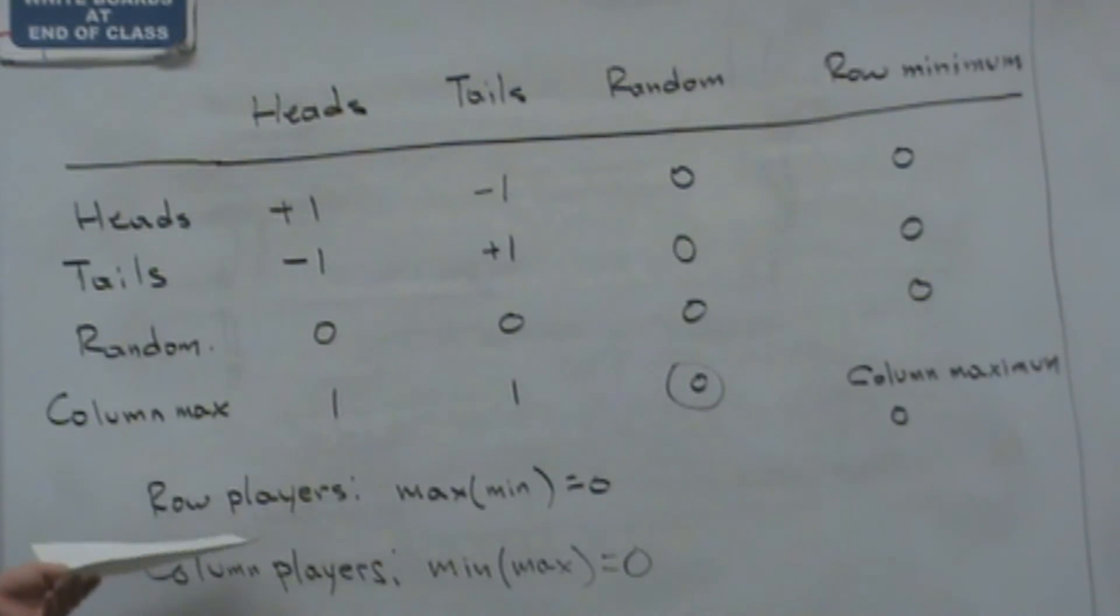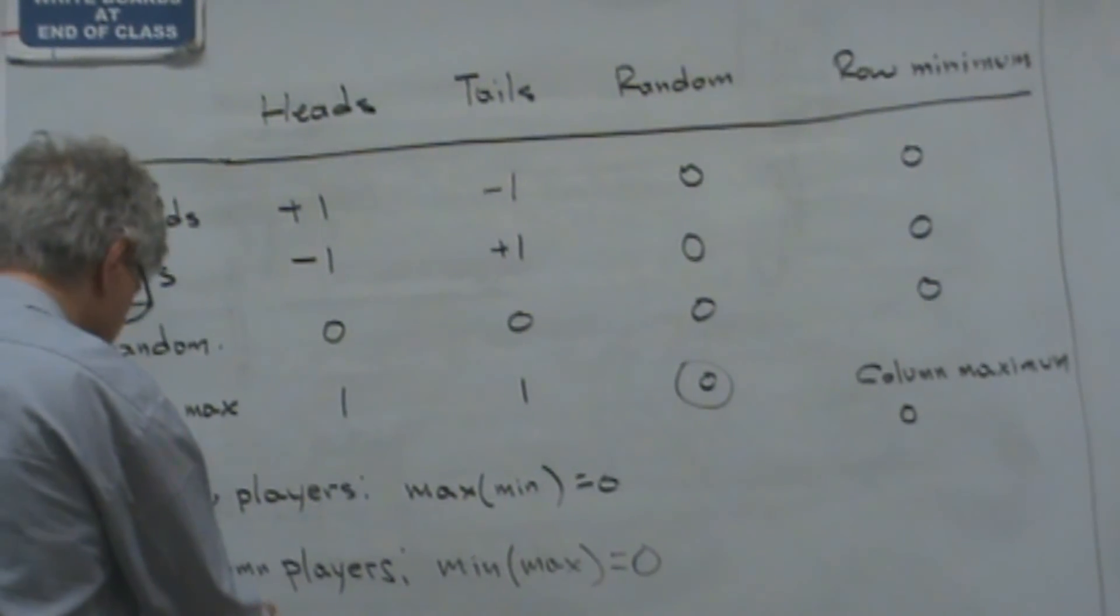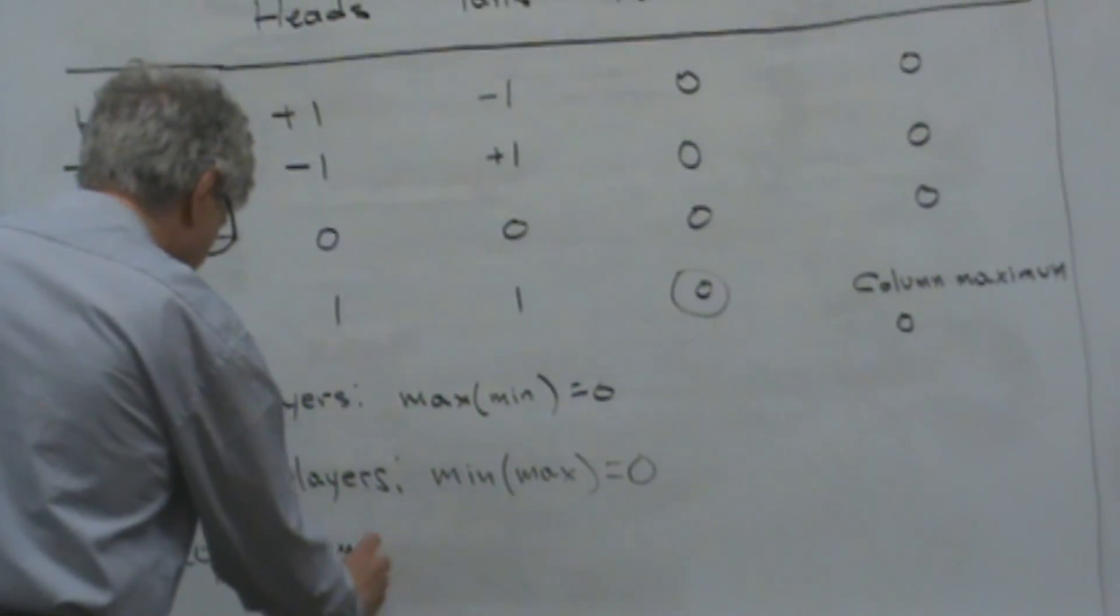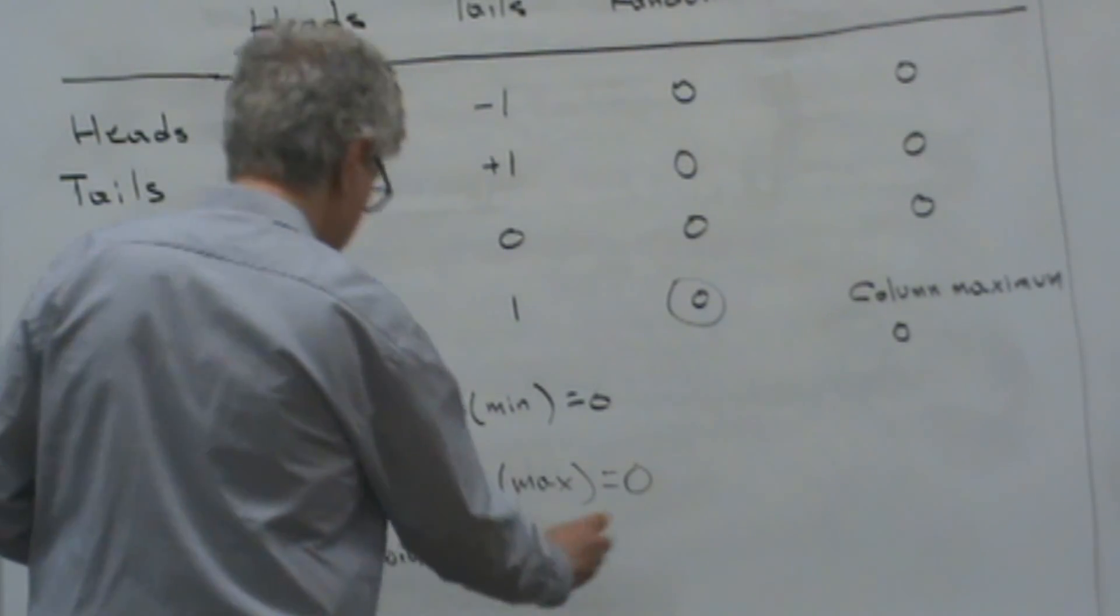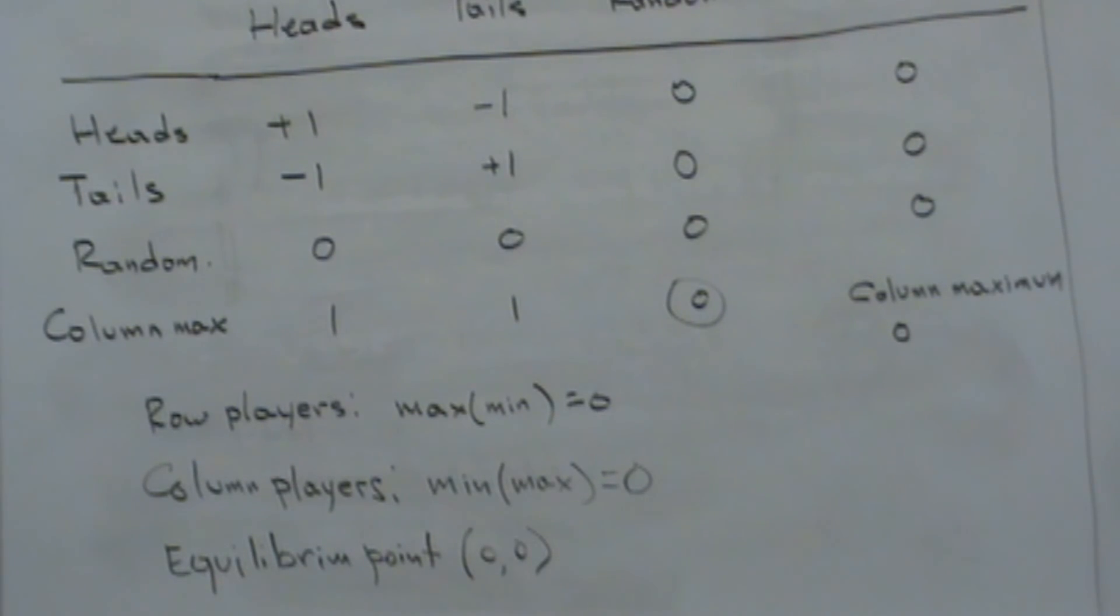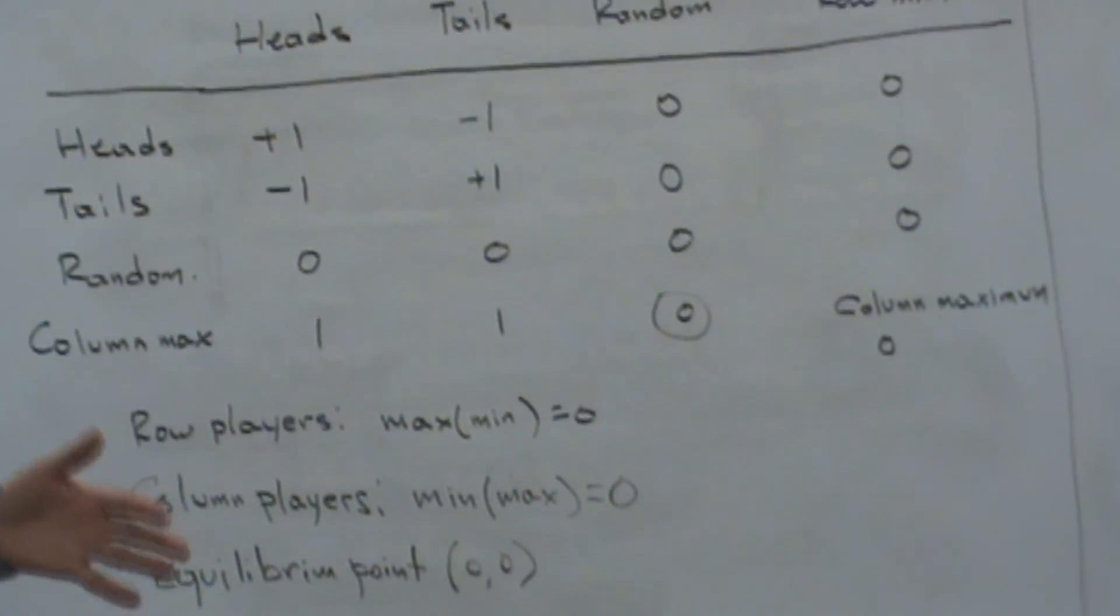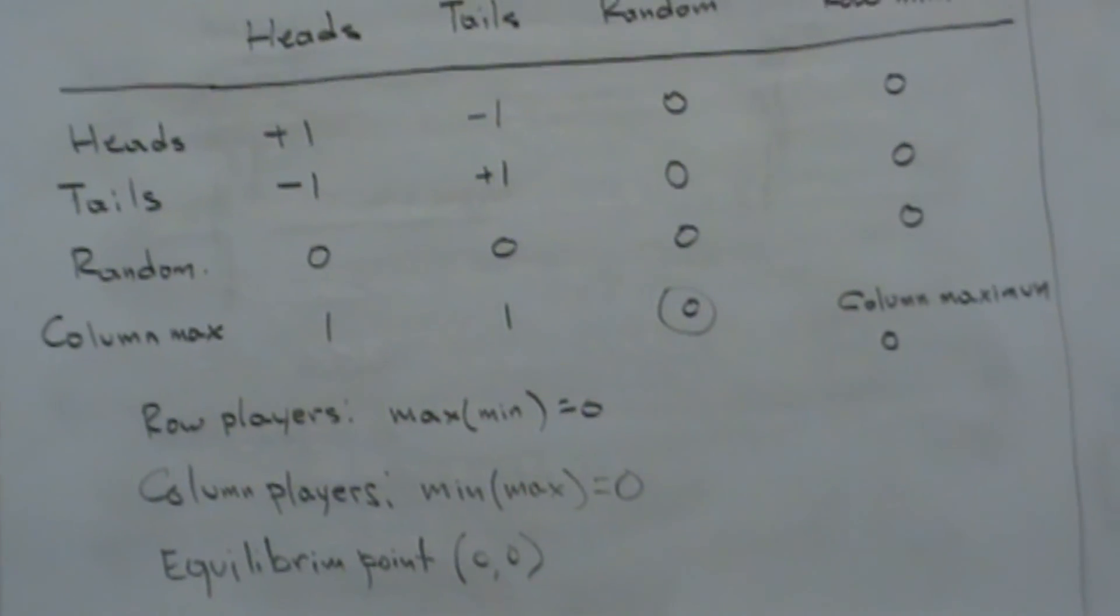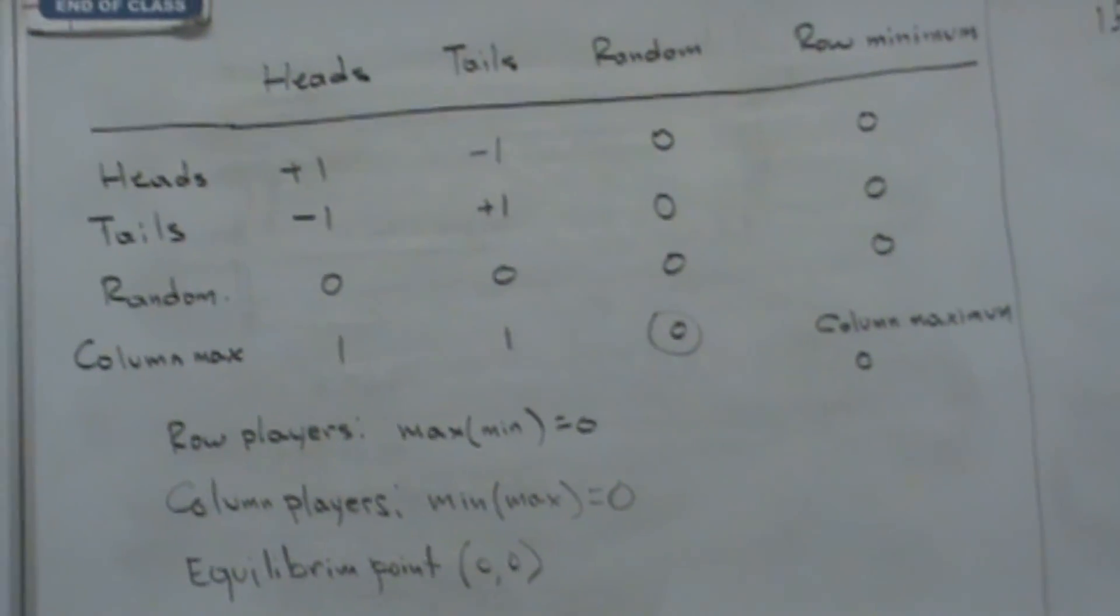That means that max min is zero and so is the min max. And so there is an equilibrium point which is zero, zero. That's the equilibrium point. So if we consider again, random strategies that are placed in the equilibrium point, if we play a very large number of times and the reward is the long-term average, then we have an equilibrium point for the game.